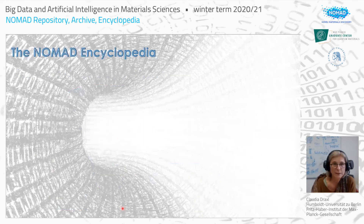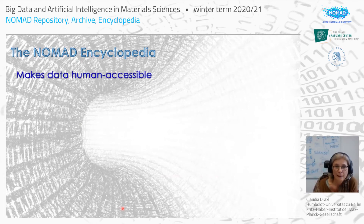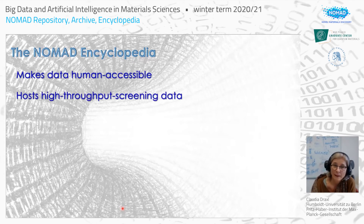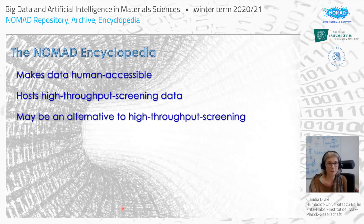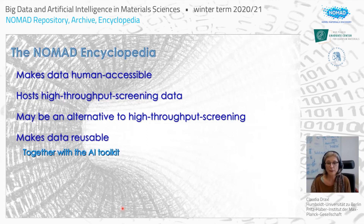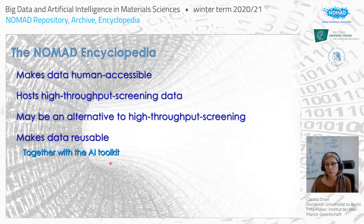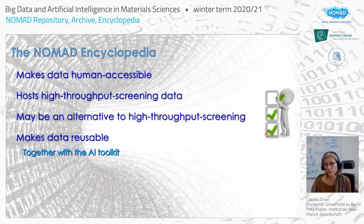Summary of the NOMAD encyclopedia: it makes data human accessible. The repository and encyclopedia host high-throughput screening data but also offer an alternative to high-throughput screening. It makes data reusable — you can see how data look and compare them with others using similarity measures. This connects to the AI toolkit, looking at different aspects. With this, we can tick off more items relevant for FAIR data infrastructures.